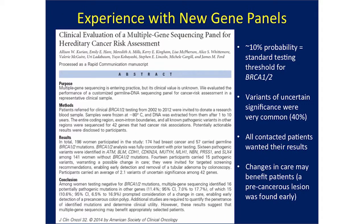We at Stanford have been quite interested in looking at these new gene panels. This is the abstract of a manuscript we published last year, where we did a clinical evaluation of one of these new multiple gene panels. We tested women who came into our clinic for BRCA testing and offered an additional sample for research. We found that for these patients who came in because of family and personal history, the chance of finding another mutation was about the same as finding a BRCA mutation — about 10 percent for each. We did find a lot of uncertain variants, which is a hazard of testing — sometimes you find things where you don't know what they mean. But all patients offered their research results wanted them, and we did begin making some changes in screening recommendations that have detected one early cancer so far.